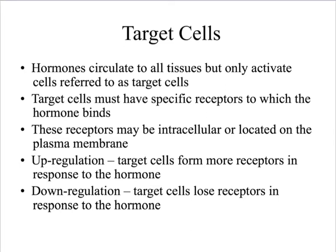Hormones can either be upregulated or downregulated. Upregulation means the target cells form more receptors in response to the hormone — the hormone binds and the cell is stimulated to add more receptors so that more hormones can bind. Downregulation is when the target cells lose receptors in response to a hormone. So it's whether a hormone is turning on a cell's activity or shutting it down.